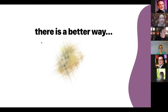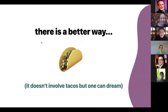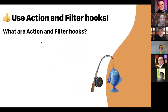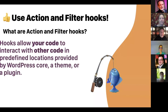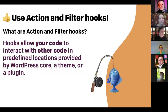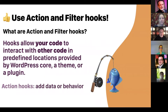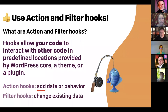The better way is using action and filter hooks. What are action and filter hooks? Broadly, hooks allow your code to interact with other code in predefined locations provided by WordPress core, a theme, or a plugin. There are two kinds of hooks: action hooks add data or behavior; filter hooks change or manipulate existing data. Today we're mostly going to focus on action hooks, since that's what WooCommerce provides for us, but we'll also look at an example of a filter.